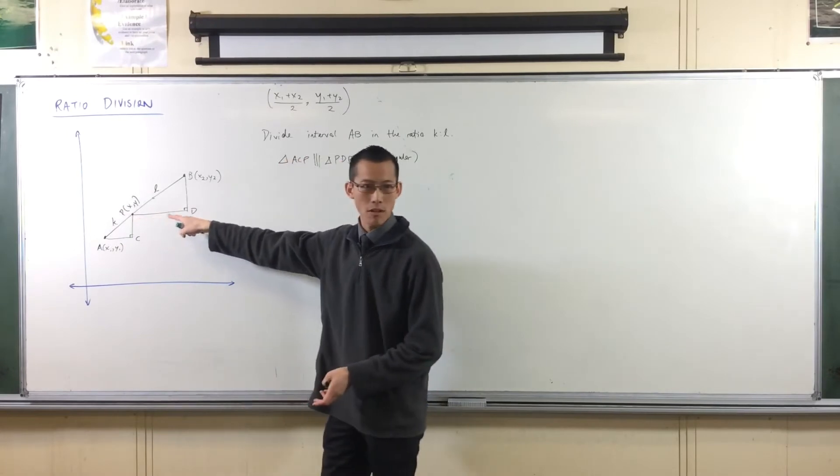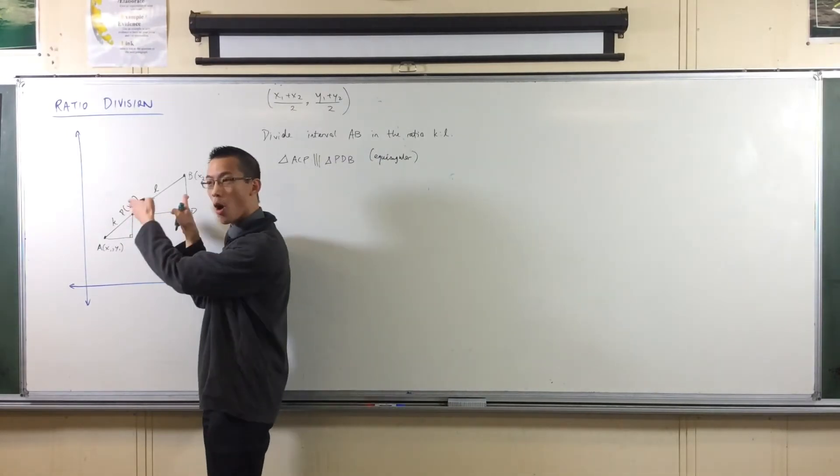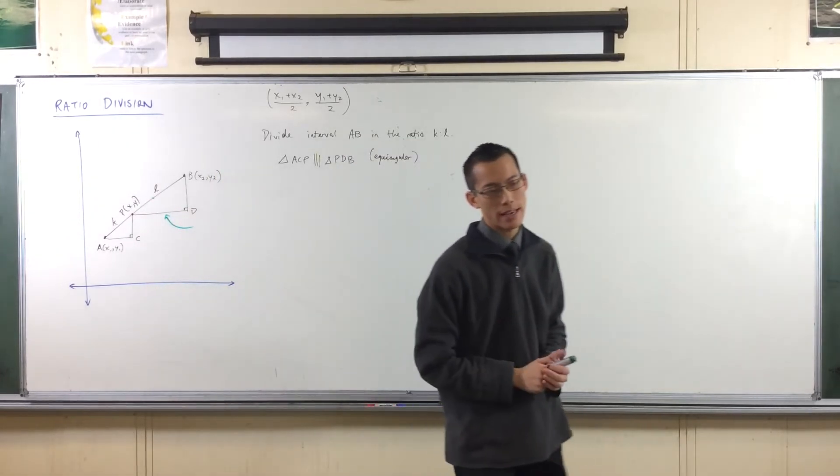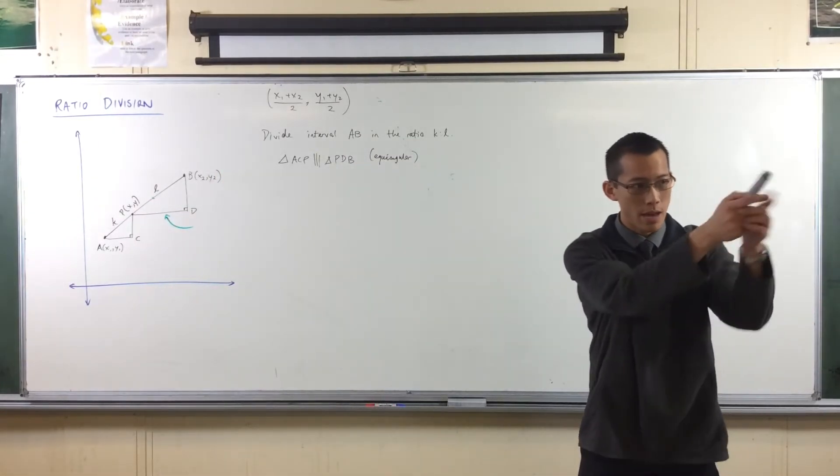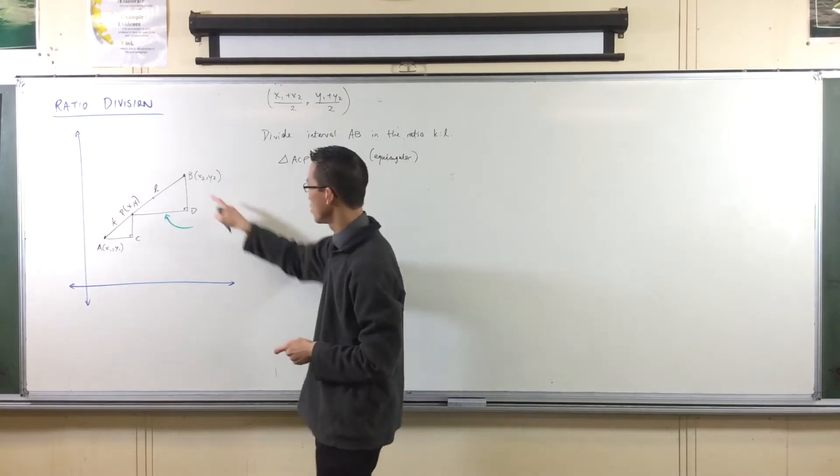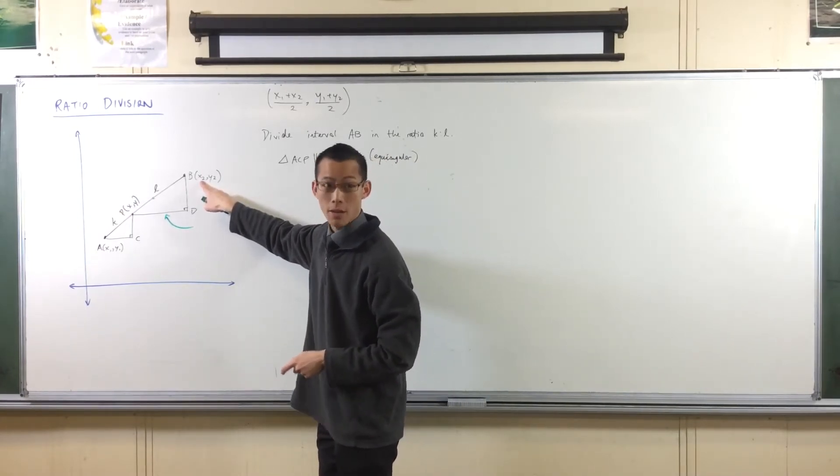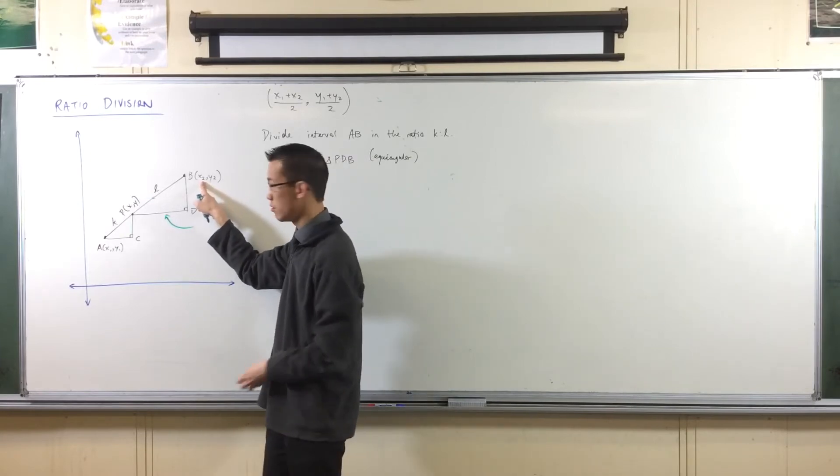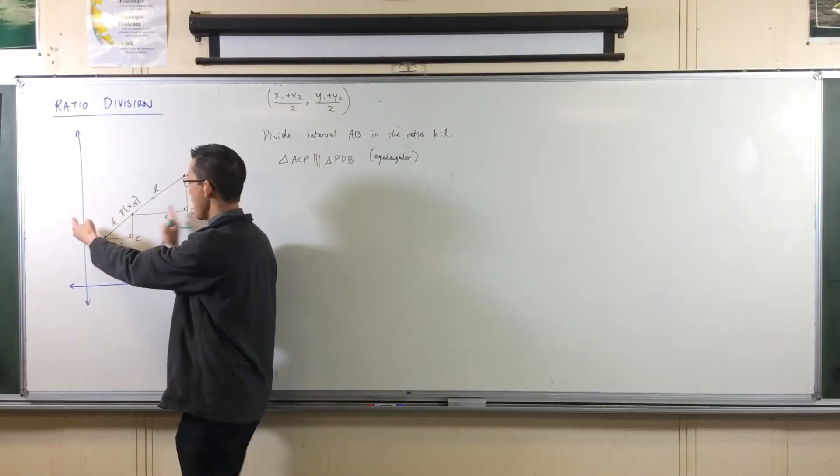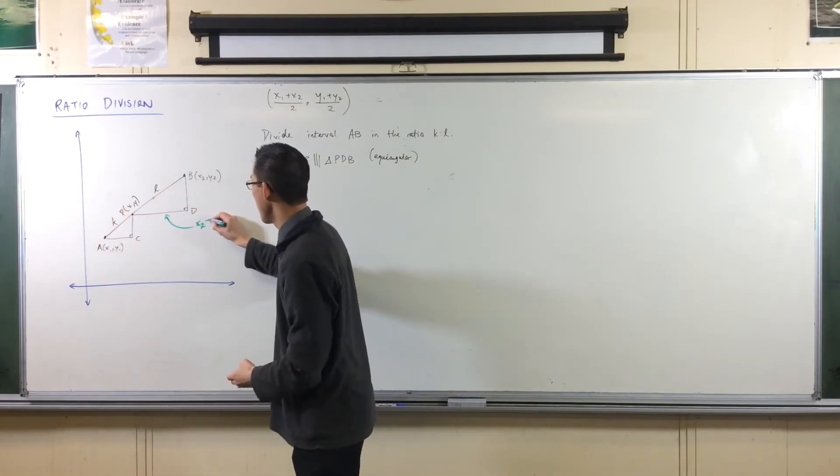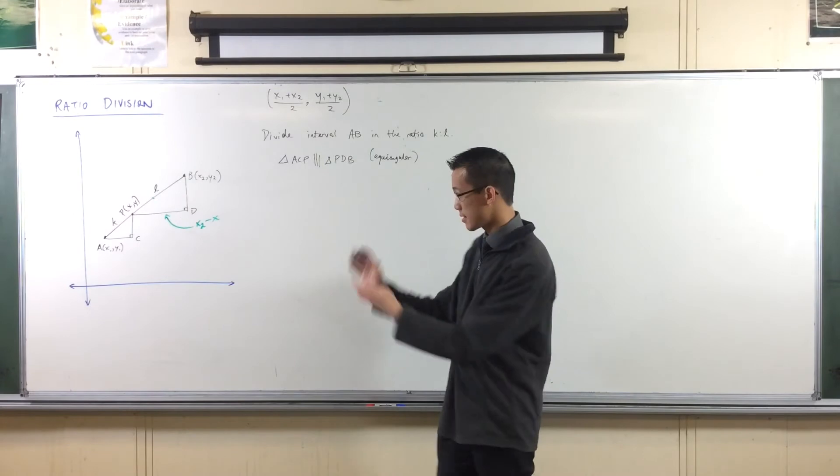If I just wanted to work out what this horizontal length was, it's just on the x values. So how would I calculate it? Yeah, Vincent? So x2 is how far I am away from the axis, and x is how far this is away from the axis. So this will be the difference. x2 minus x. That's p, d. Using exactly the same logic, I can get a, c. Which is starting from x, and I'm taking away x1.